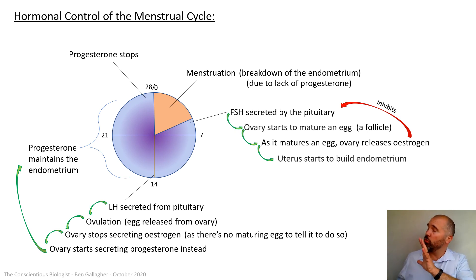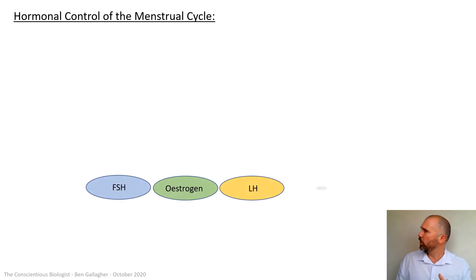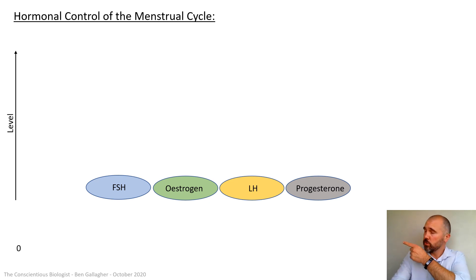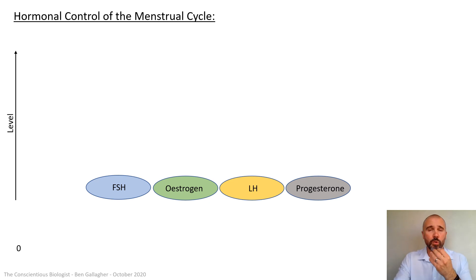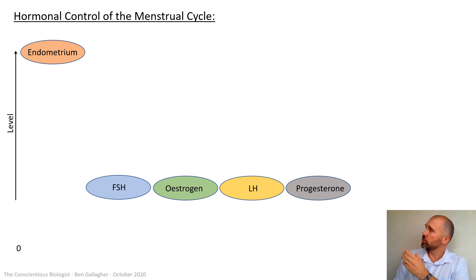So this has got all the hormones, when they're produced and how — but this is quite complex. Take a screenshot of this so you've got it. Now I'm going to describe the same thing but in a graphical way. I'm going to put the four key hormones on the bottom here, and I want you to imagine we're showing the level of any of these hormones — how much is in the blood at any one time. We're going to show how they change from day zero, and to show how they impact on the endometrium, I'm going to put that on the chart as well. On day zero, the endometrium is at its thickest.